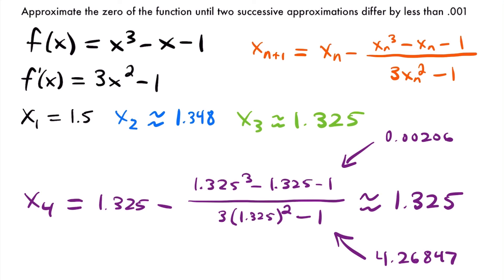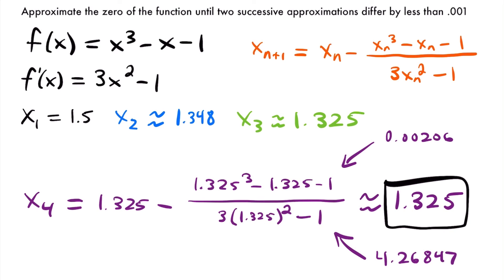x4 is approximately equal to 1.325, which differs by less than 0.001 from our approximation for x sub 3. These look the same because I didn't show more of the decimals, but they aren't the exact same value — they differ by less than 0.001. So we can stop and say that our final approximation for the x-intercept, or the zero of our function, is 1.325.